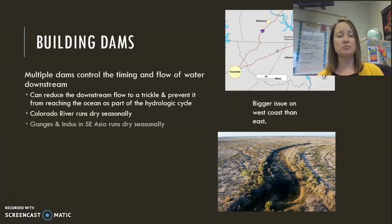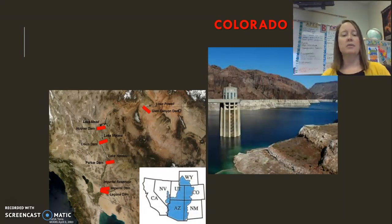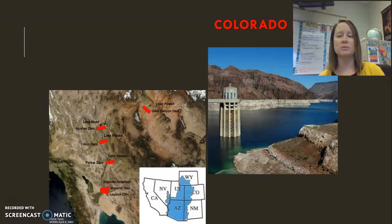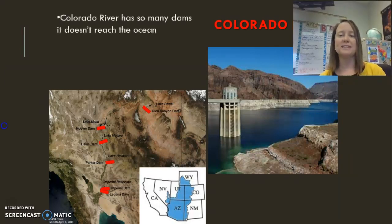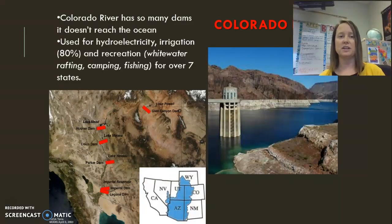In Southeast Asia, the Ganges and the Indus Rivers run dry seasonally. If we look at the Colorado River Basin, it covers seven states and each of those states have built dams to create reservoirs. The one shown in the picture here is Lake Mead behind the Hoover Dam. Because it's in a very dry area, the water levels have dropped significantly, and as more and more people move into those areas, we're increasing our water usage.